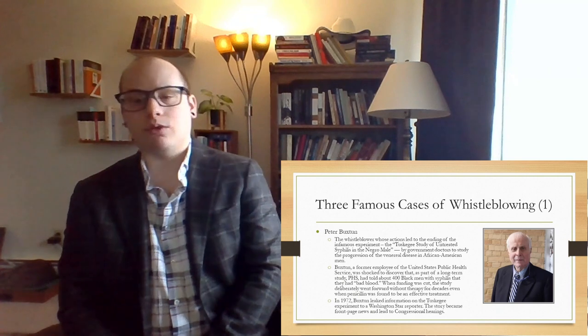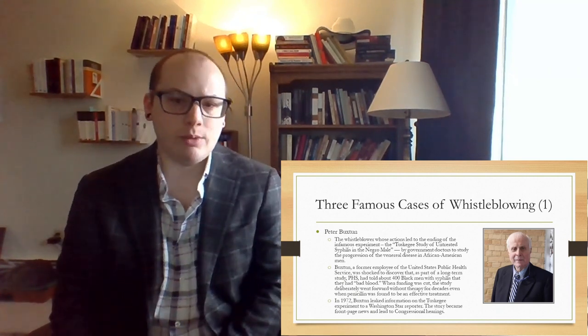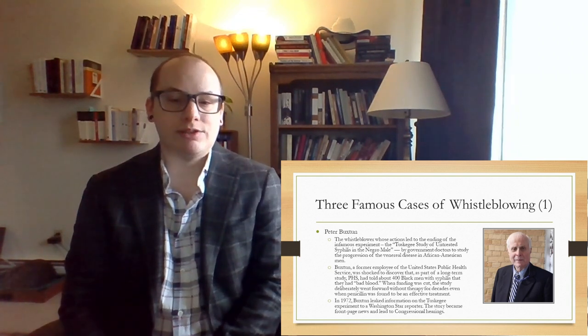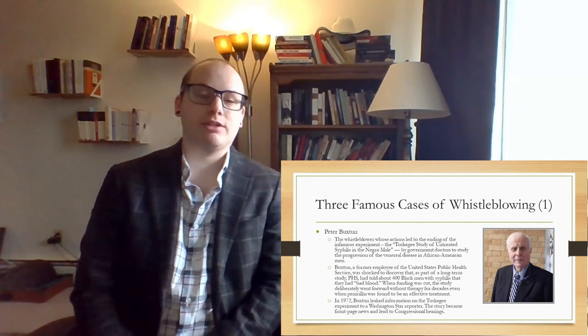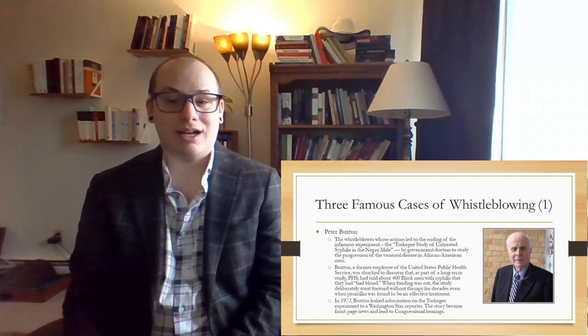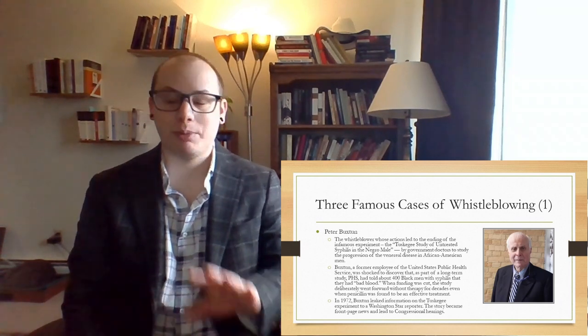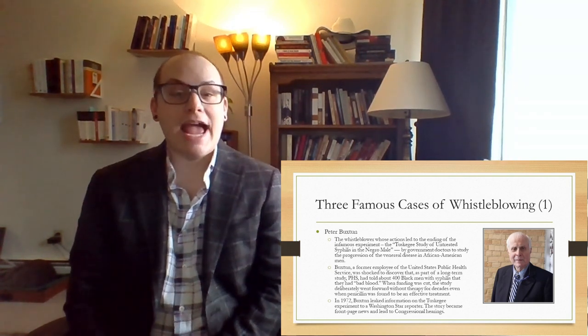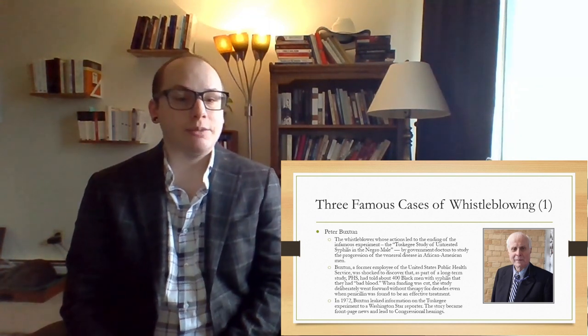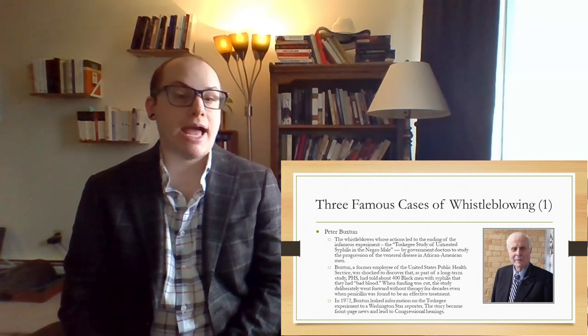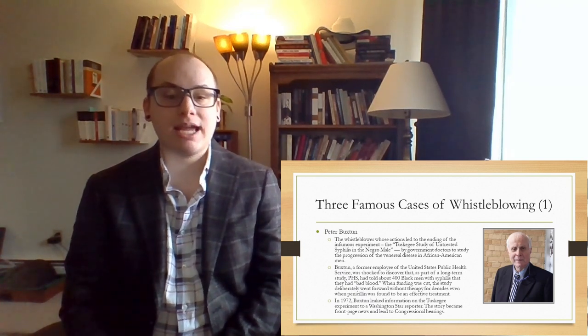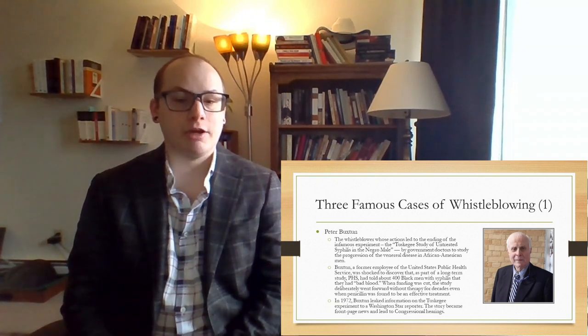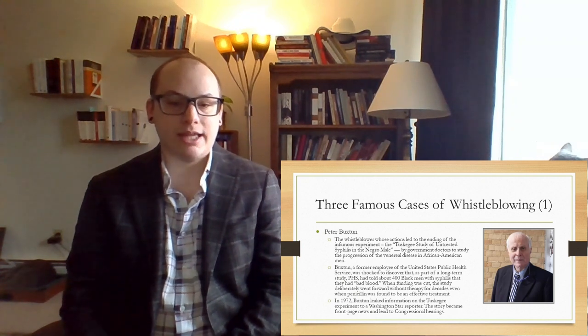So what I want to do is actually look at some cases of whistleblowing. This first case is Peter Buxton. This is the whistleblower whose actions led to the ending of the infamous experiment, the Tuskegee study of untreated syphilis in the Negro male. It was done by government doctors to study the progression of the venereal disease in African American men. Basically what they were doing was injecting black men with syphilis, and the black men didn't know that they were being injected with syphilis. So Buxton exposed this to the public. He was a former employee of the United States Public Health Service, and he was shocked to discover that as part of a long-term study, the PHS had told about 400 black men with syphilis that they had bad blood. When funding was cut, the study deliberately went forward without therapy for decades, even when penicillin was found to be an effective treatment. In 1972, Buxton leaked information on the Tuskegee experiment to a Washington Star reporter. The story became front-page news and led to congressional hearings.